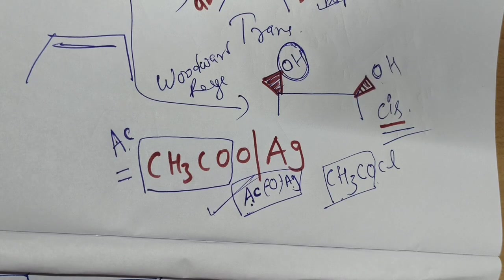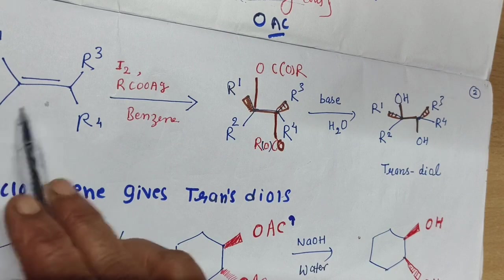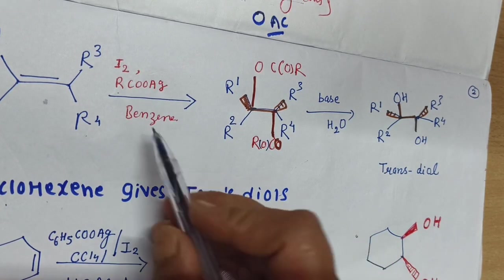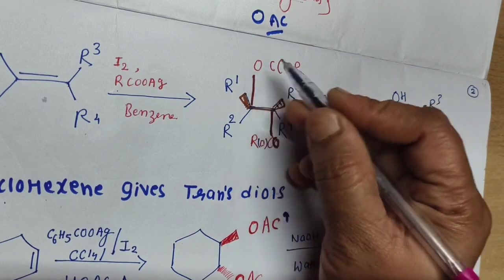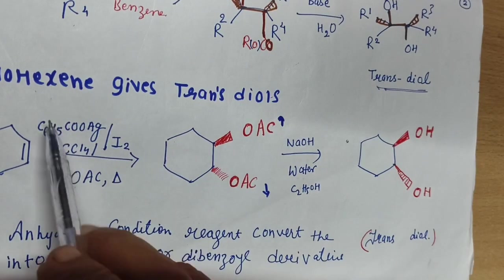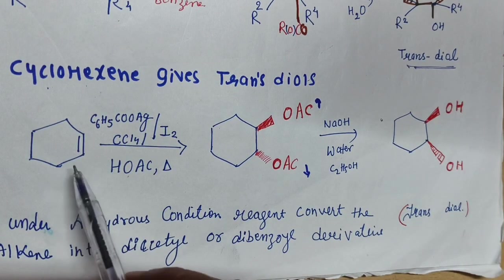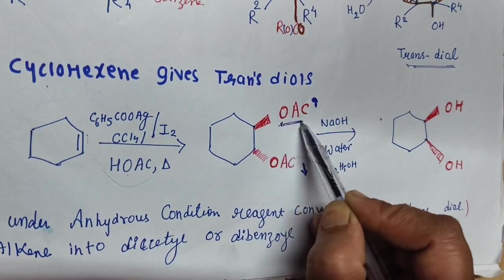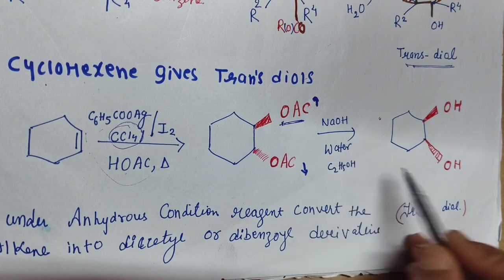Woodward-Prévost hydroxylation means the addition of OH groups. For the Prévost reaction, we take any alkene with R1, R2, R3, R4 groups in the presence of iodine and a silver salt in benzene solution. You first get an acyl intermediate with the RCOOAg group attached, and then in the presence of base, it converts to trans-diols. For example, cyclohexene treated with Prévost reagent — silver acetate or silver benzoate with iodine in carbon tetrachloride — gives a trans-diol product.